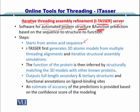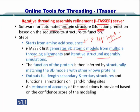It starts with the input of an amino acid sequence — the sequence for which you want to predict the structure. I-TASSER will then generate all 3D atomic models for multiple threading alignments automatically at the server end, creating iterative structural assemblies. These iteratively constructed assemblies will be simulated and evaluated, and then the function will be inferred by structurally matching the 3D model with other known proteins whose function is known.